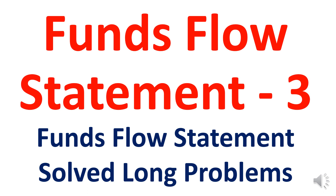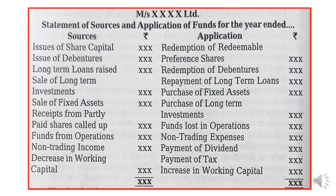Let's start this video covering the long questions. This is the format of the statement of sources and application of funds. Sources refers to how the company is getting money — the forms in which the company is procuring finance. Application refers to how the money generated from various sources is applied and used by the company. This statement is like a balance sheet wherein we provide information on both source and application.